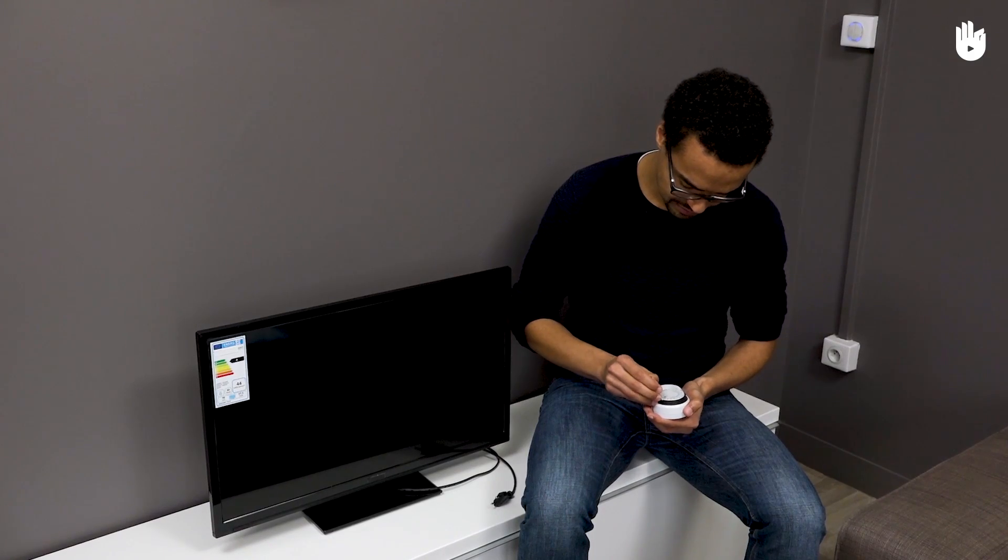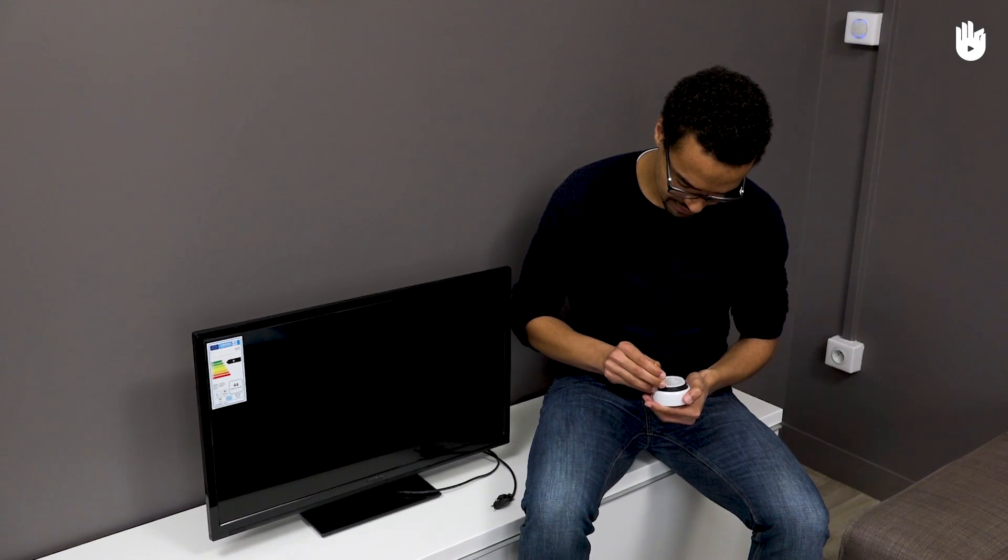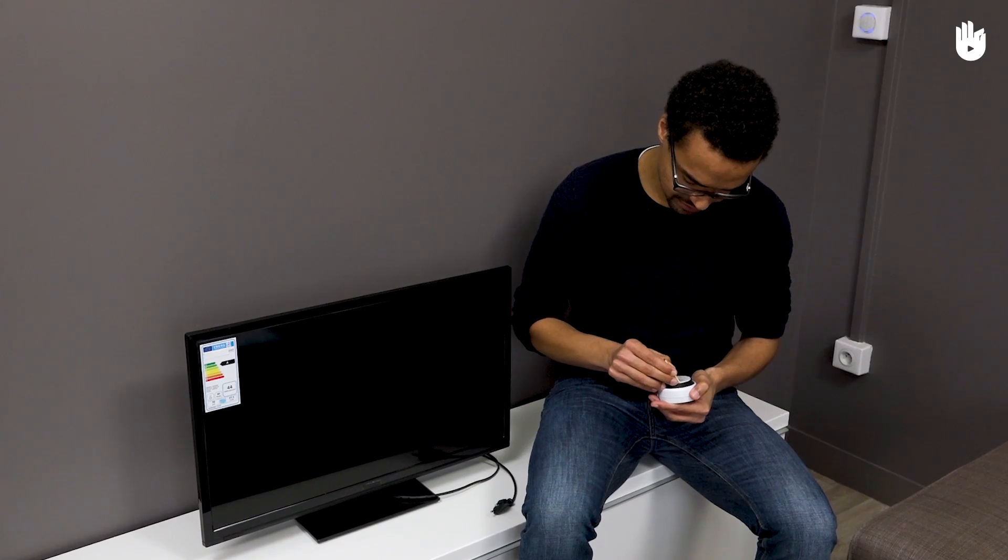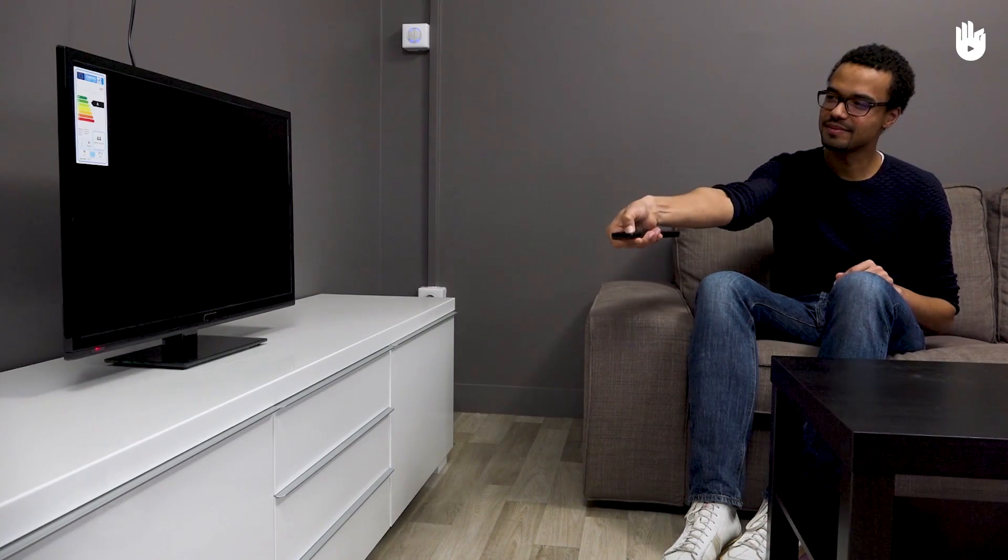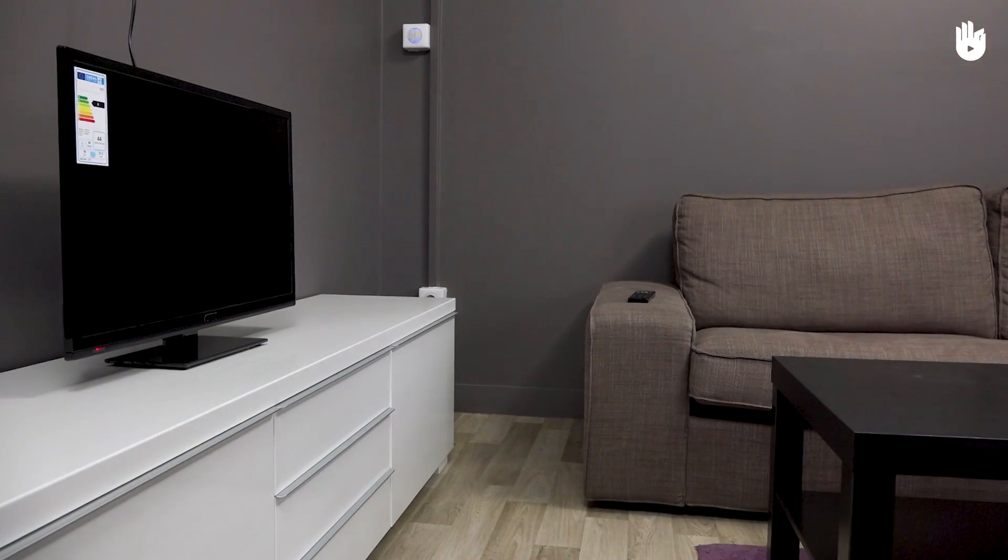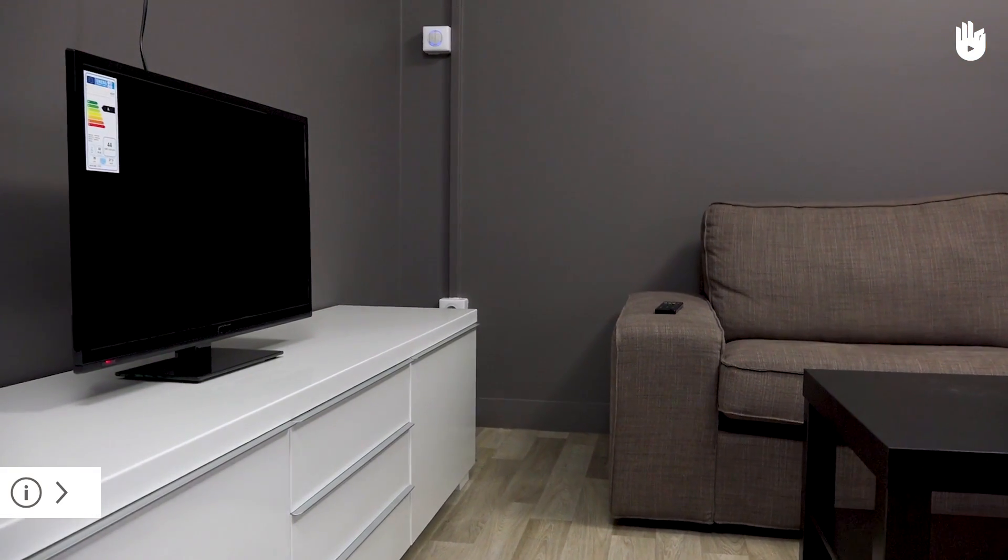The timer automatically triggers or interrupts the current to one or several electrical devices based on the time periods you set. It can prove useful if you forget to unplug your devices when you're no longer using them, as they continue to use energy even when on standby.